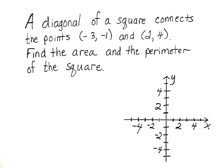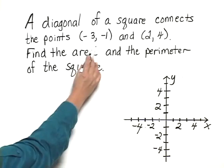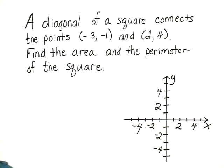A diagonal of a square connects the points negative 3, negative 1, and 2, 4. Find the area and the perimeter of the square.